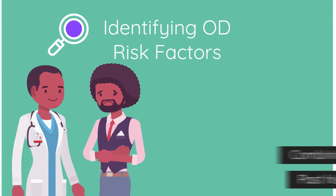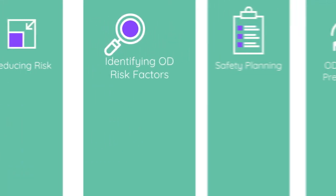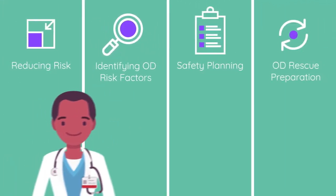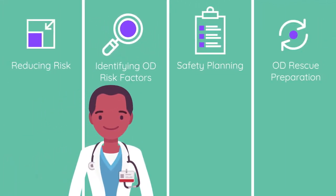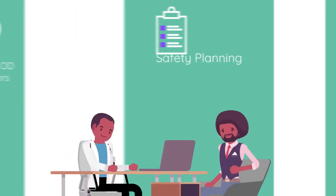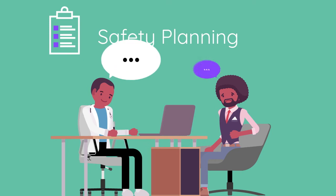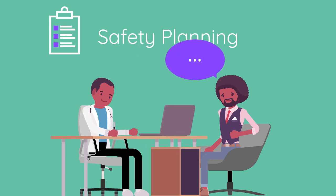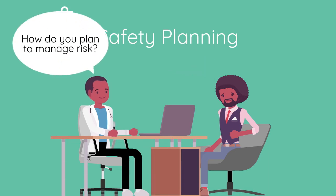Once the patient's specific overdose risk factors have been identified, a safety plan — the third key strategy — is created to address those factors. Safety planning is an active and collaborative process with the patient, which is updated and modified as circumstances or risk factors change. To begin safety planning, ask the patient how they plan to manage their identified risks.